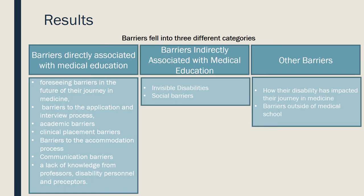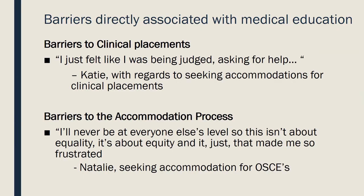The barriers identified by the participants fell into three overarching categories: barriers directly associated with medical education, barriers indirectly associated with medical education such as invisible disabilities and social barriers, and other barriers including how their disability impacted their journey in medicine and barriers outside of medical school. Many of the direct educational barriers had to do with seeking accommodations.